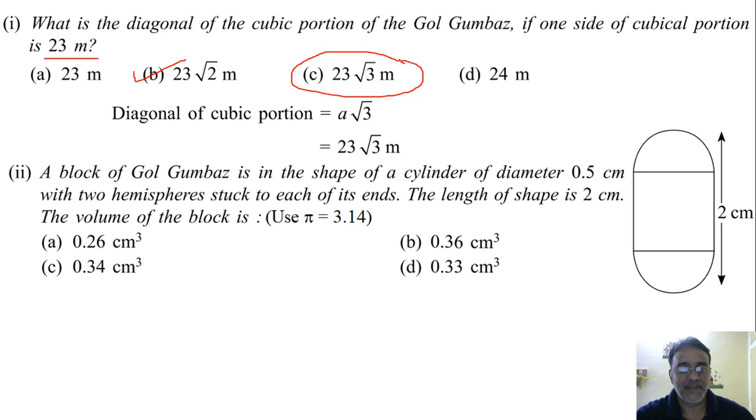So now second question. A block of Gol Gumbas is in the shape of a cylinder of diameter 0.5 centimeter, a very small part. With two hemispheres stuck to each of its ends. The length of the shape is 2 centimeter. Total length. Yahan se yahan tak. See this figure here. And the volume of the block is dash. So use pi is equals to 3.14 here. If this is not mentioned we can use 22 by 7.